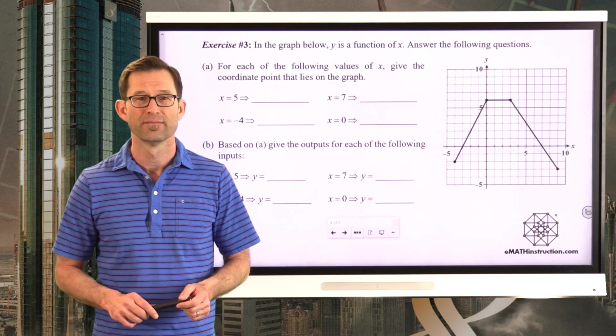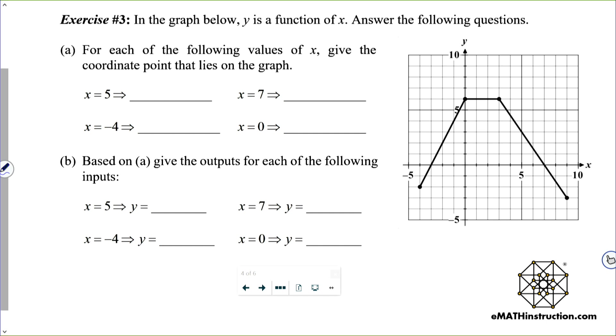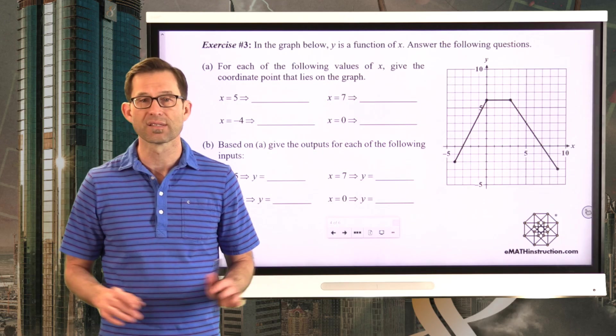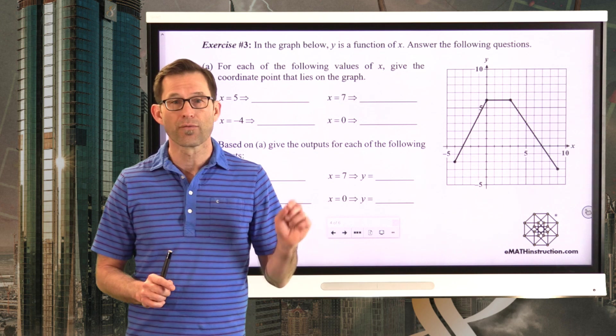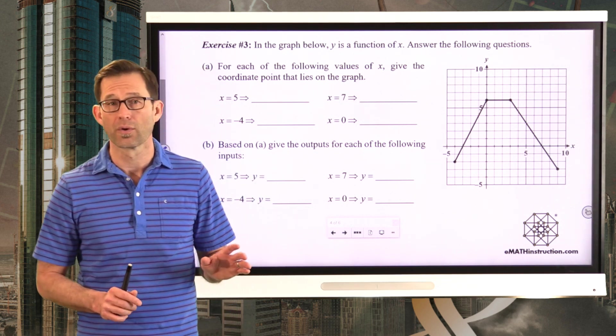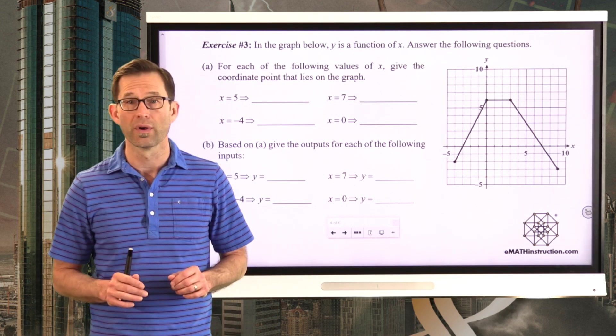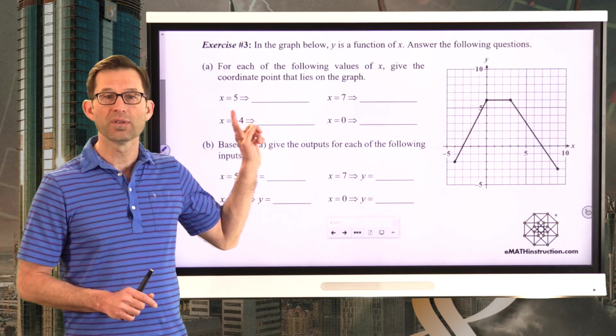Let's take a look at exercise three. In the graph below, y is a function of x. Answer the following questions. Letter a. For each of the following values of x, give the coordinate point that lies on the graph. All right, fantastic. So let's do this together for one of them and then have you do the other three on your own because I know you know how to read a coordinate grid.